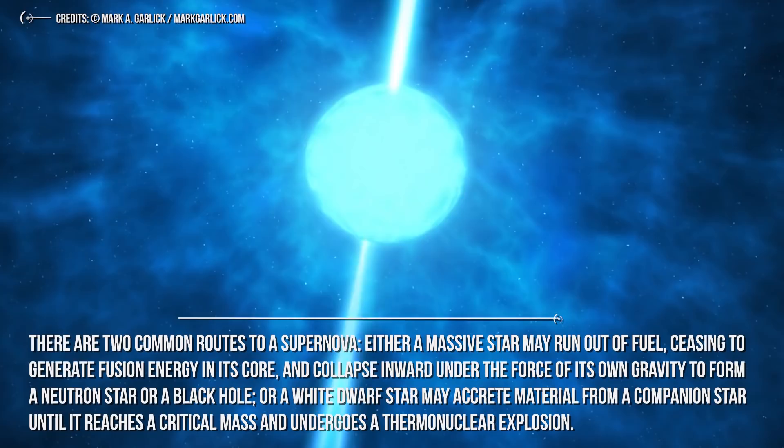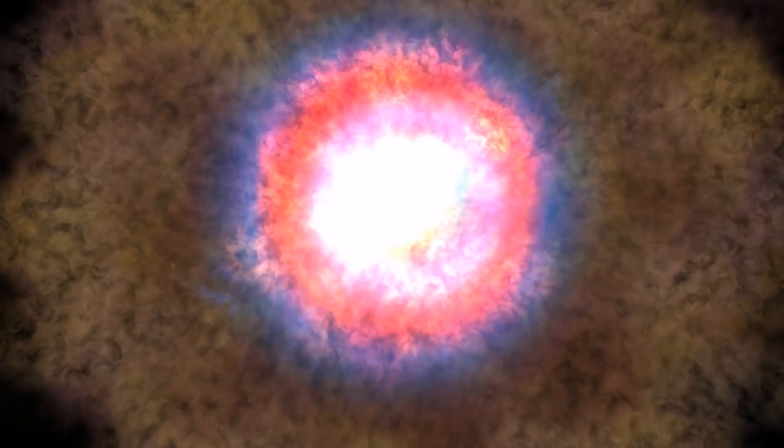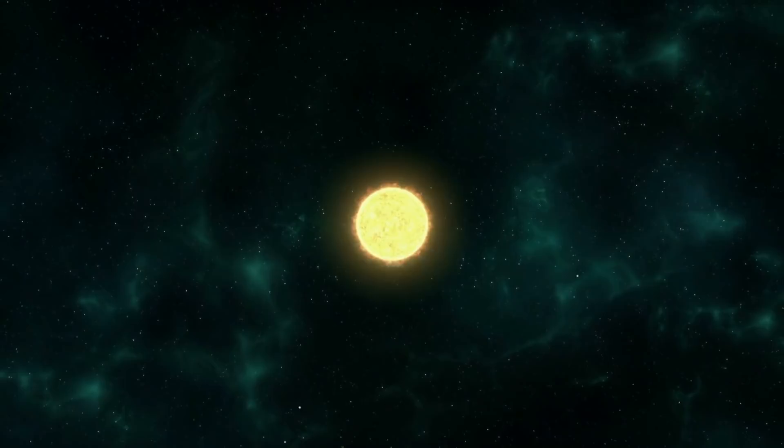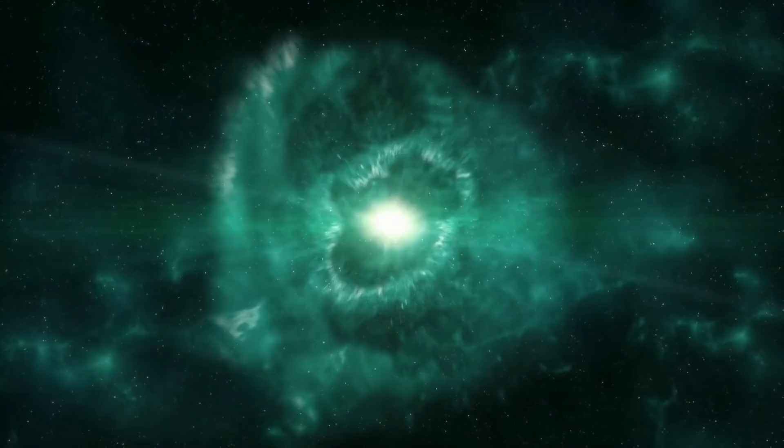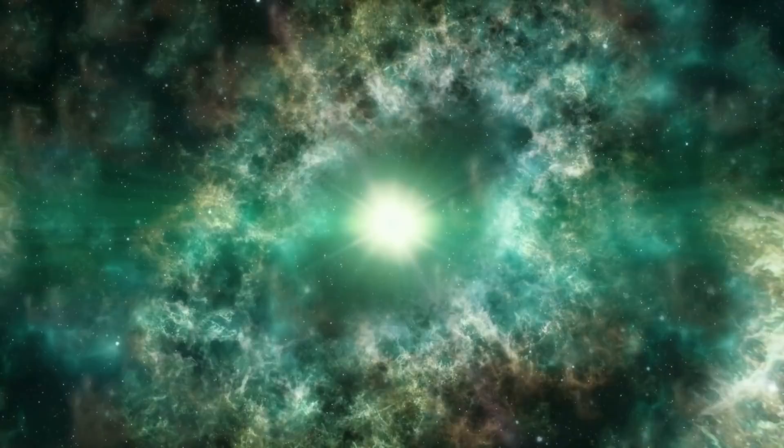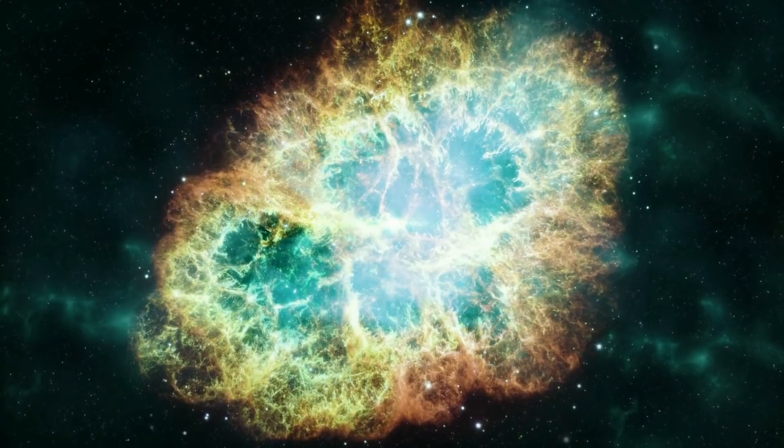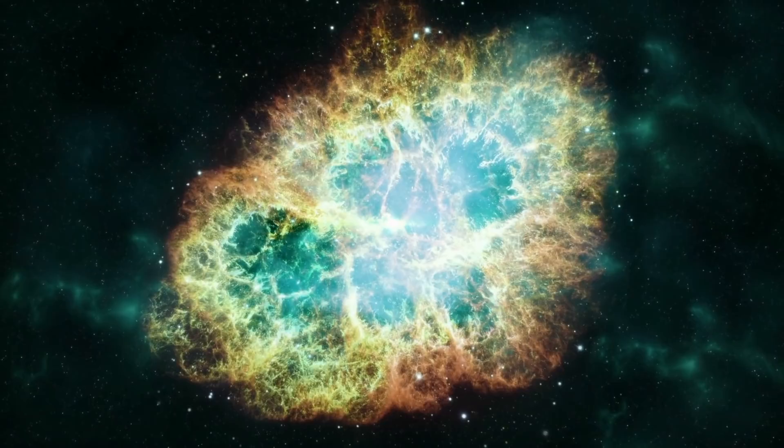In either case, the resulting supernova explosion expels much or all the stellar material with velocities as much as 10% the speed of light, approximately 30,000 kilometers per second. These speeds are highly supersonic, so a strong shockwave forms ahead of the ejecta that heats the upstream plasma up to temperatures well above millions of Kelvin. The shock continuously slows down over time as it sweeps up the ambient medium, but it can expand over hundreds or thousands of years over tens of parsecs before its speed falls below the local sound speed.